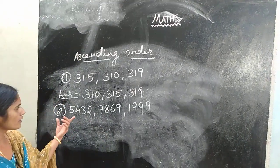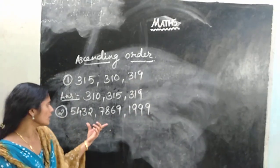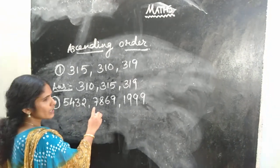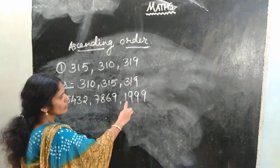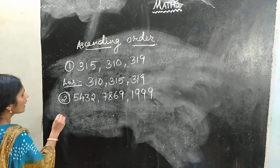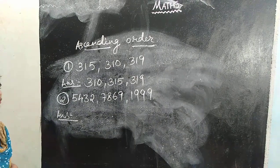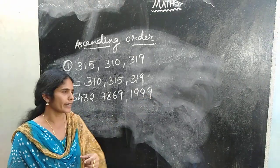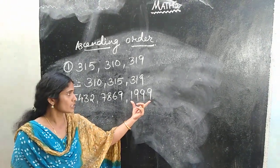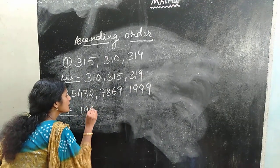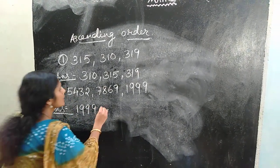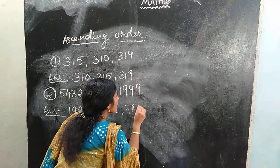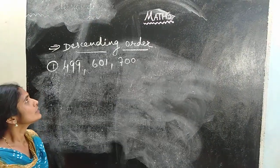We can see another example with 4-digit numbers. The numbers are 5,442, 7,869 and 1,999. How we can arrange these numbers in ascending order? Which is the smaller number? 1,999 is the smaller number, so we have to write 1,999 first. The next number is 5,442 and the next one is 7,869.